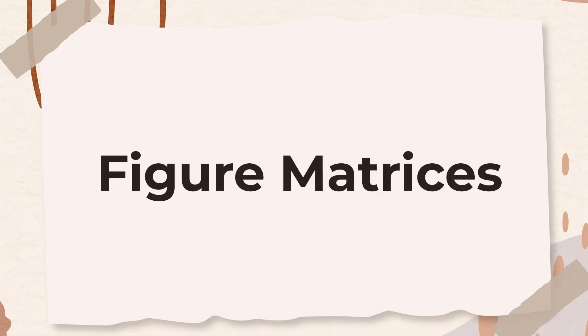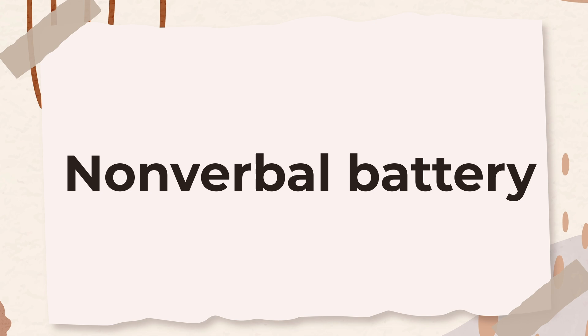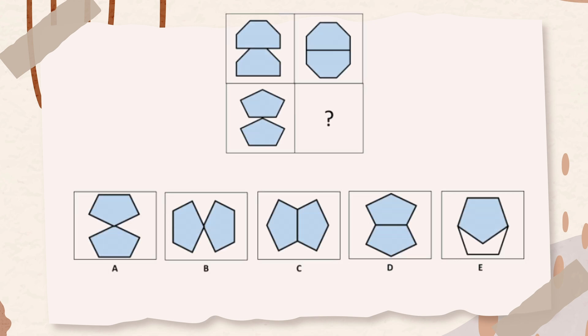The first subtest we'll cover is figure matrices, which is part of the nonverbal battery. The following question has three figures. The first two figures in the top row go together. The third figure in the bottom row goes with one of the answer choices. Choose the answer choice that goes with the third figure. You can pause the video to examine it carefully.